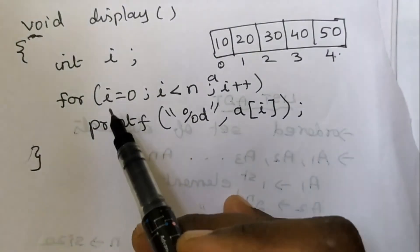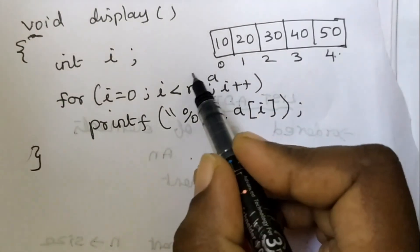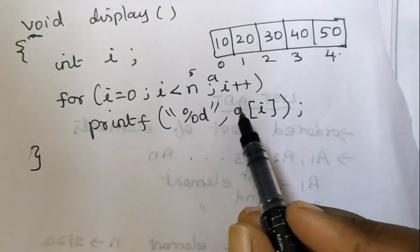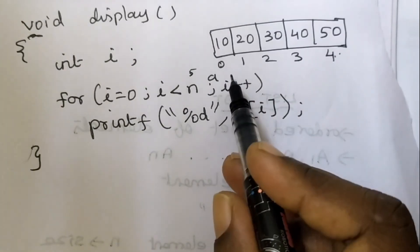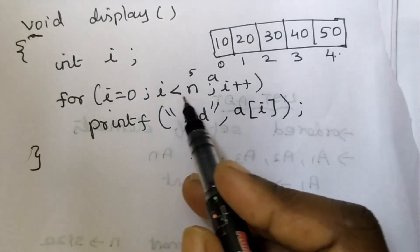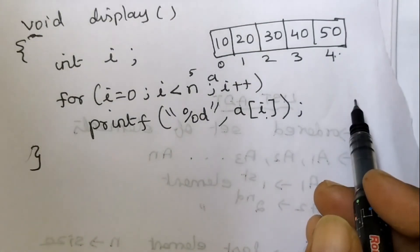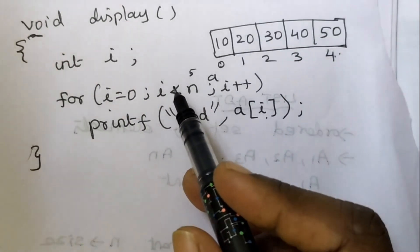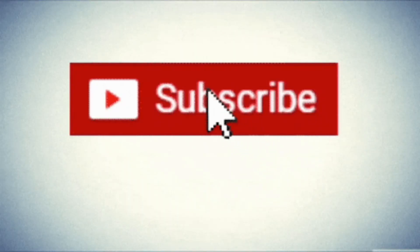How this for loop executes: i = 0, 0 less than 5 — condition true, so we print a[0] which is 10. Then i is incremented to 1, 1 less than 5 — condition true, so a[1] = 20 will be printed. This loop continues executing until the condition fails.